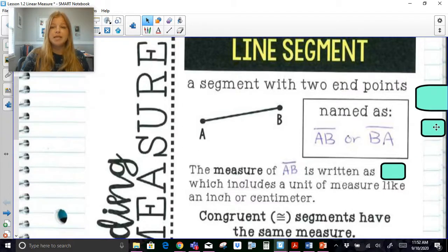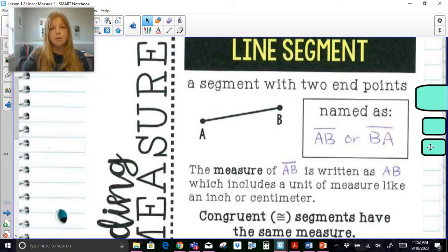It says the measure of segment AB is written as just AB. So we're going to get really used to right from the beginning when we talk about the physical segment, we use the bar over the A and B. When we're talking about the measure of it, the value, what's the actual length, is it four inches is it four centimeters, the measure of that segment we don't use the bar above it and we just call it AB. And also notice we're using capital letters just like in my previous video I talked about using a capital letter when we name a point so point A or point B, we use those capital letters when we're naming a segment. So the measure of segment AB is written as AB which includes a unit of measure like inch or centimeter.